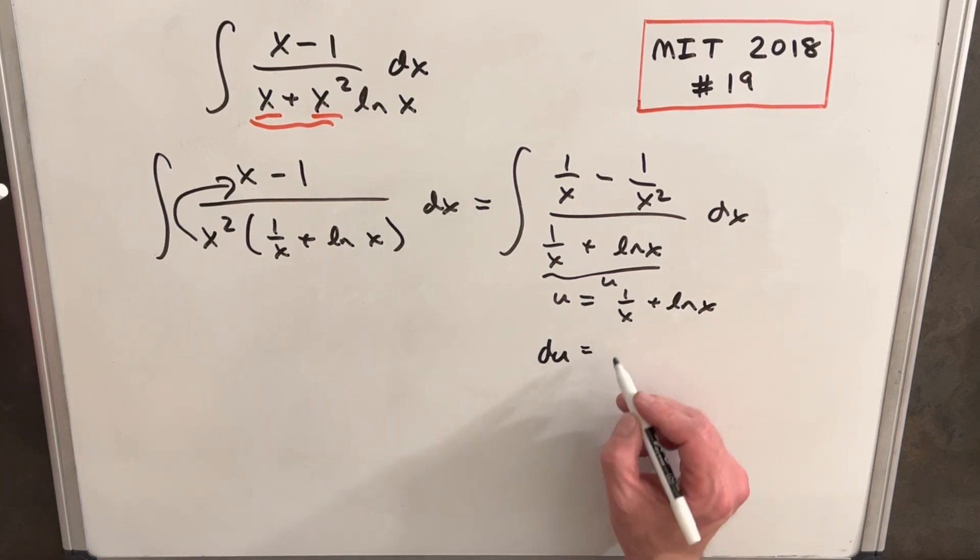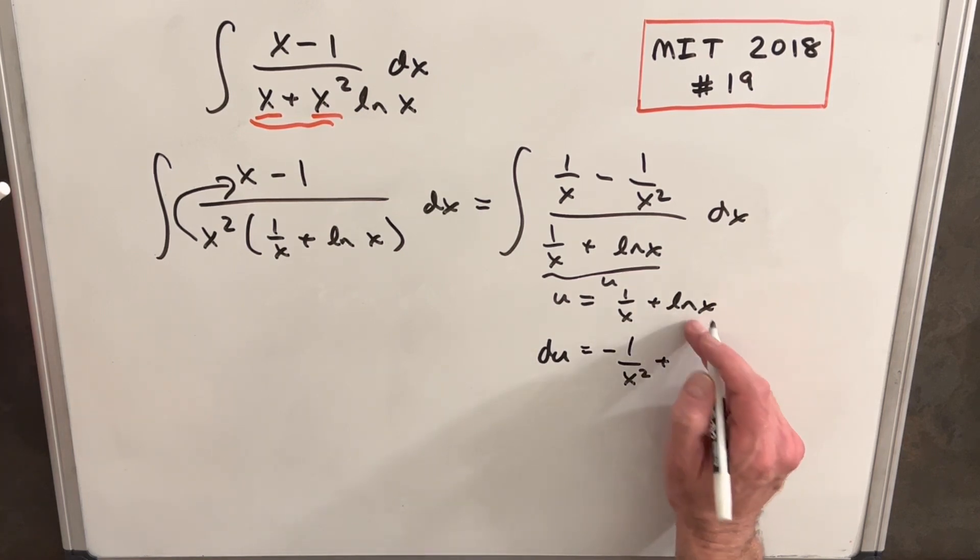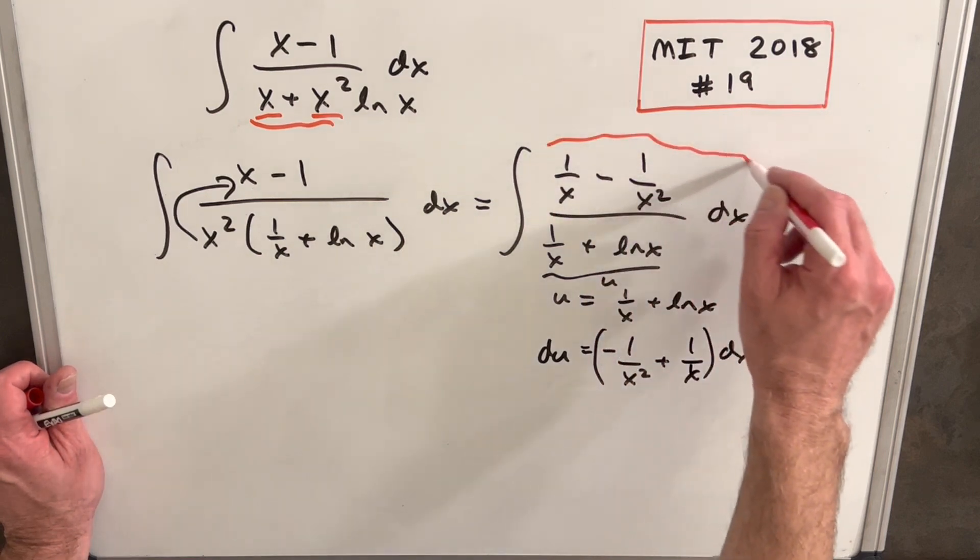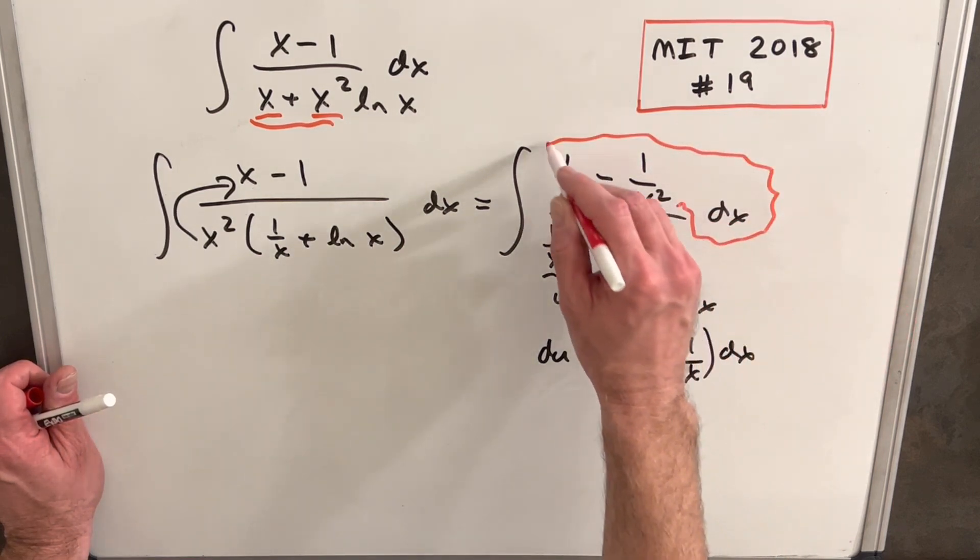So du is actually going to be -1/x², and derivative of ln(x) is 1/x, dx. And then if we just switch this order, we have the exact—we have our du up here.